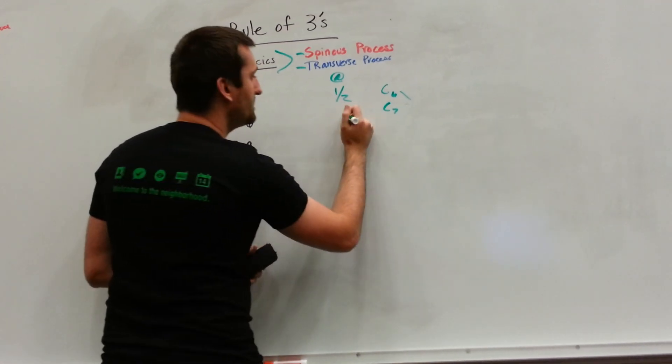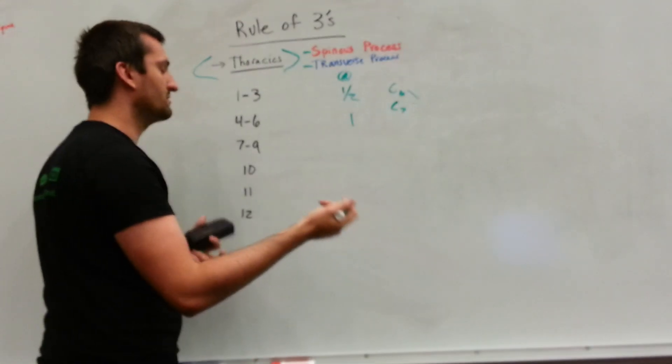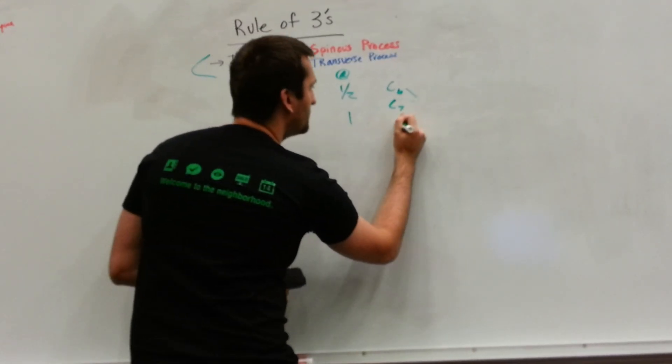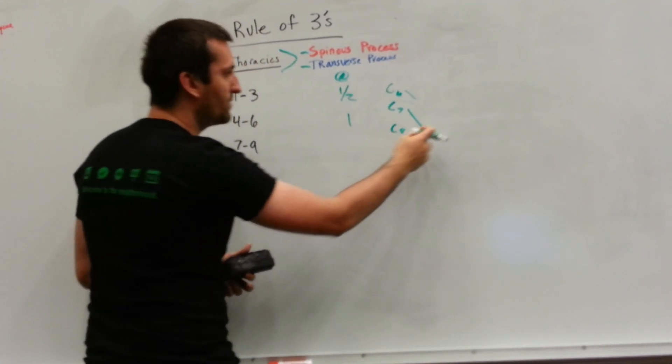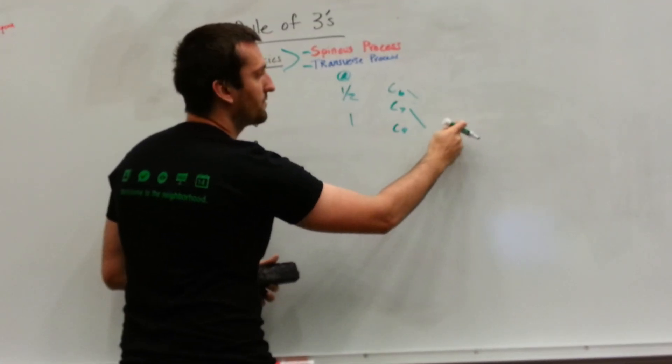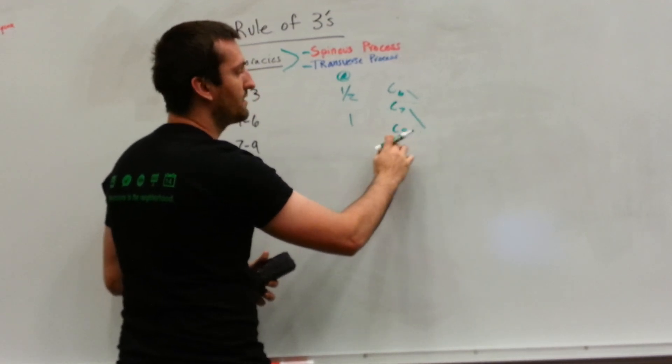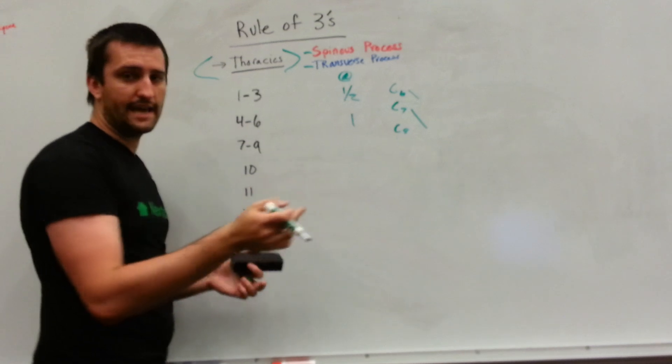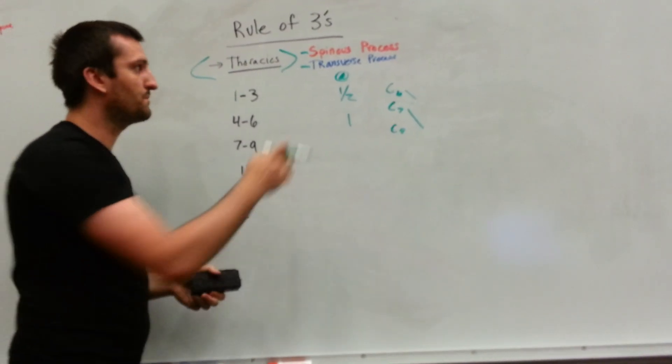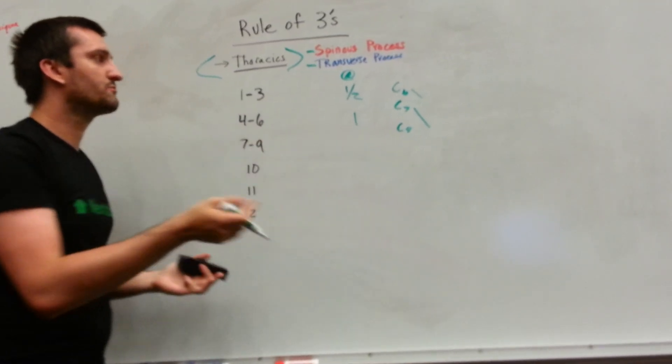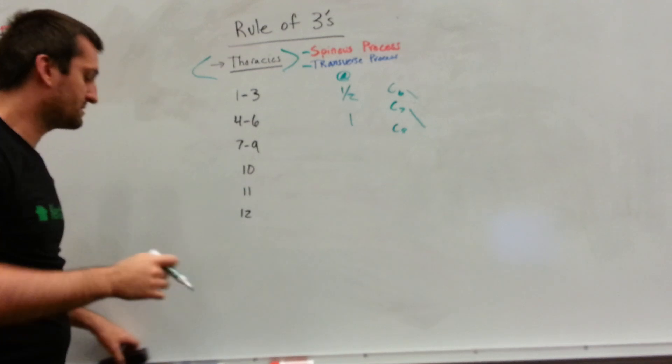Or it could be one full level below. So if we're talking about a certain level, like C8, it could be a full level below. So when we're palpating the spinous process, we feel that spinous process tip, it could be theoretically at the level of C8. So what the rule of threes is going to do is it's going to tell you where the spinous process is in relationship to the transverse process of that vertebral level.